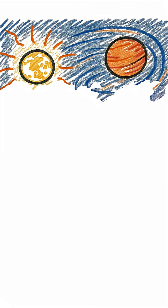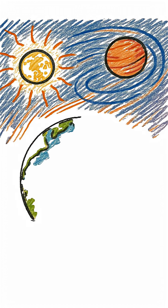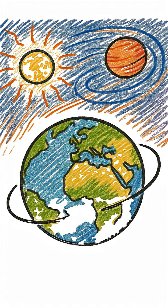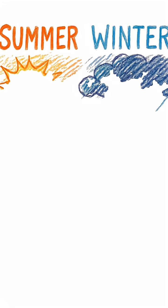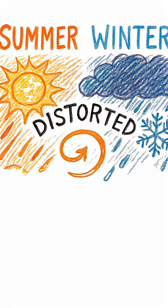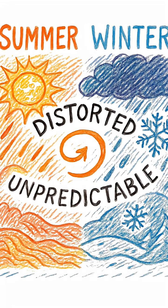At the same time, this new chaotic dance in the sky destabilizes Earth's 23.5 degree axial tilt, the very thing that gives us our seasons. Summer and winter would become distorted, unpredictable concepts spiraling our climate into ruin.